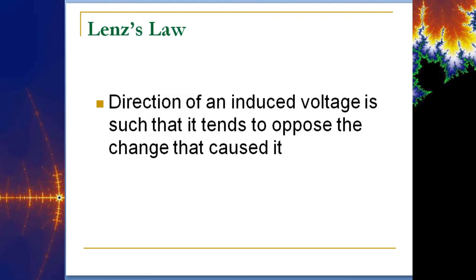Lenz's Law says the direction of an induced voltage is such that it tends to oppose the change that caused it. The induced voltage is going to be dependent on some type of current change. Whether you're trying to increase or decrease the current — if it's not at steady state — an inductor or any coil of wire will induce a voltage on it.